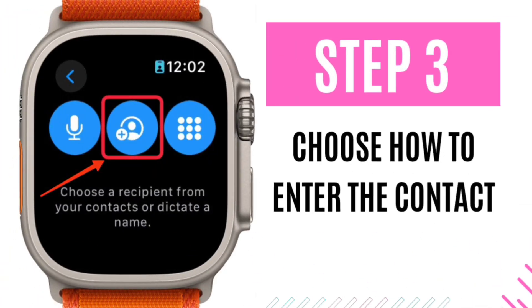Step 3: Choose how to enter the contact. Use the microphone to dictate a name, then tap the Contacts icon to select from your list, and use the keypad to manually enter a phone number.